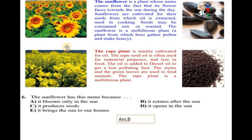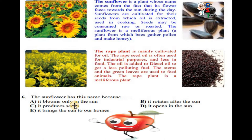Now another information is given. The sunflower is a plant whose name comes from the fact that its flower faces towards the sun during the day. Sunflowers are cultivated for their seeds from which oil is extracted, used in cooking. Seeds may be consumed raw or roasted. The sunflower is a melliferous plant, a plant from which bees gather pollen and make honey. The rape plant is mainly cultivated for oil. The rape seed oil is often used for industrial purposes and less in food. The oil is added to diesel oil to get less polluting fuel. The stems and the green leaves are used to feed animals. It means it's a food for animals. The rape plant is a melliferous plant, same as bees gather pollen and make honey. And the color of the rape plant is yellow.